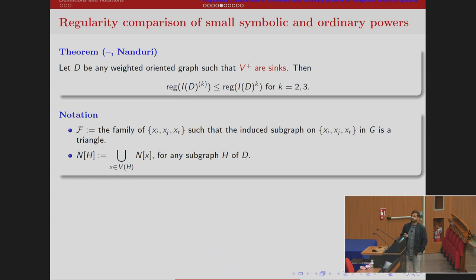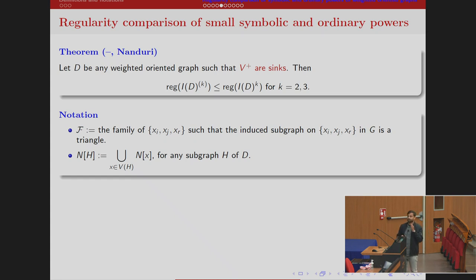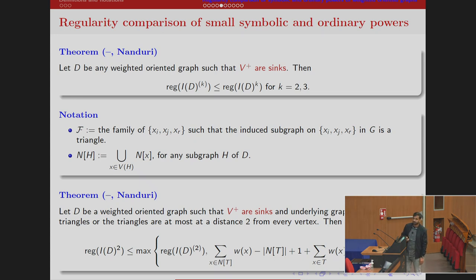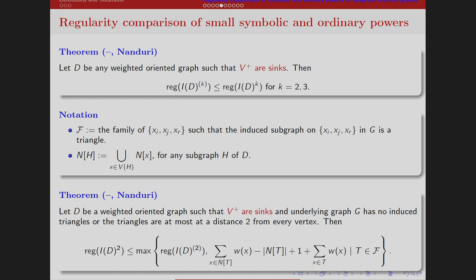Here are some notations: F will be a family of vertices of a triangle in the underlying graph, and N(H) is the closed neighborhood of a subgraph of the underlying graph — the union of all closed neighborhoods of vertices of a subgraph. Here is a sharp upper bound for the regularity of the second symbolic power for some class of graphs: take any weighted oriented graph such that V+ are sinks and the underlying graph G has no induced triangles, or if triangles are present they are at most at distance 2 from every vertex. For such graphs, the regularity of I_D squared is less than or equal to the maximum of the regularity of the second symbolic power and an additional term.